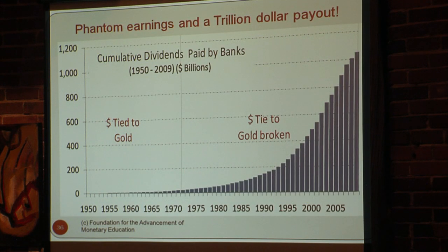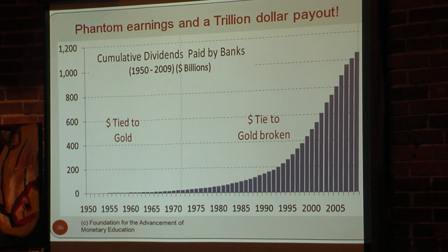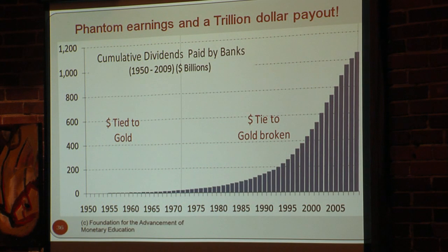They paid out something like a trillion dollars in dividends, and those dividends weren't really earned money in any real sense — it was keyed into a computer — but they bought real stuff with it, as I'll show you in just a minute.